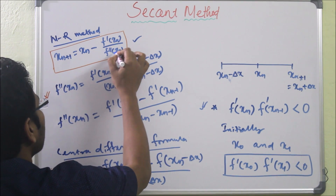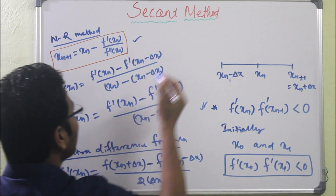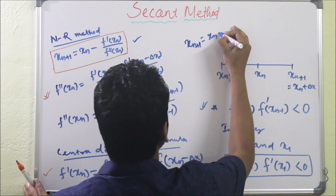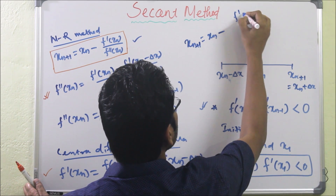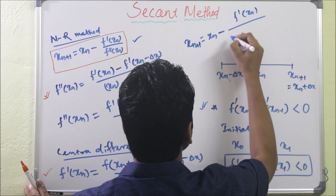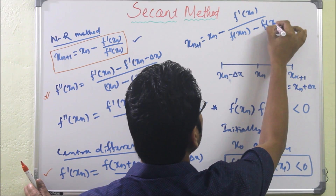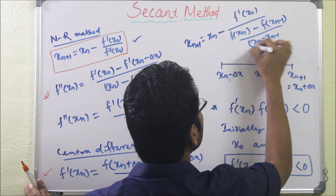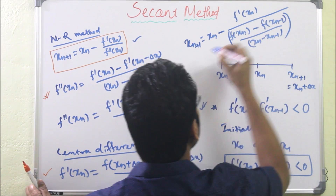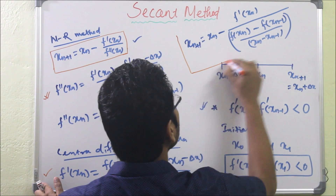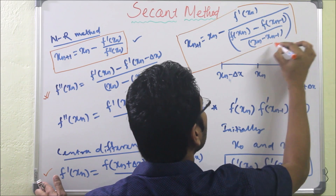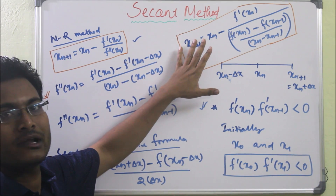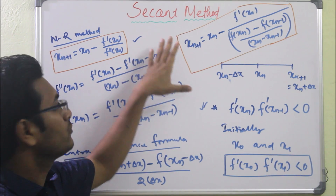After replacing f''(X(n)) with the secant approximation, the working formula becomes: X(n+1) = X(n) minus f'(X(n)) divided by [f(X(n)) minus f(X(n-1))] divided by [X(n) minus X(n-1)]. We have to remember this formula to get the successive minimum value through the secant method.